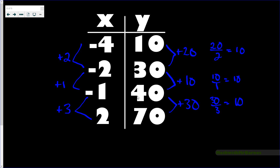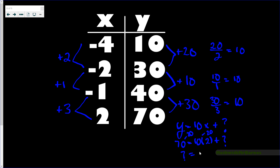Now we find the equation. We use the rate of change of 10, so y = 10x + ?. Using the point (2, 70): 70 = 10(2) + ?, giving 70 = 20 + ?, so ? = 50. Our equation is y = 10x + 50. That means if x were zero, y would be 50 — that's the starting point between the values in the table.